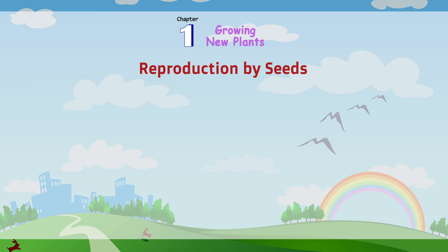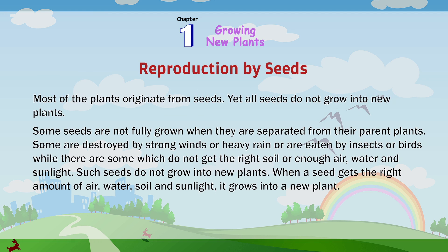Reproduction by seeds. Most of the plants originate from seeds. Yet, all seeds do not grow into new plants. Some seeds are not fully grown when they are separated from their parent plants. Some are destroyed by strong winds or heavy rain, or are eaten by insects or birds, while there are some which do not get the right soil or enough air. Such seeds do not grow into new plants.